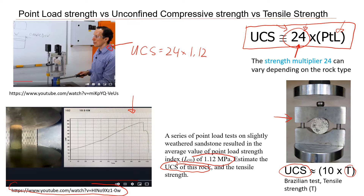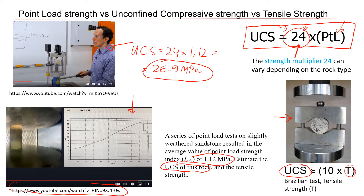How do we get this multiplier of 24? Researchers have conducted many tests — they measured the unconfined compressive strength of rocks and also the point load index values, and derived this rough estimation. Remember, it is an estimation. If you test rocks from your region, you may get a different multiplier — that's okay. But if you don't know the appropriate multiplier for your region, it's acceptable to use 24. The result is 26.9 MPa — this is the estimated unconfined compressive strength from the point load index.